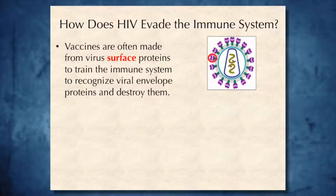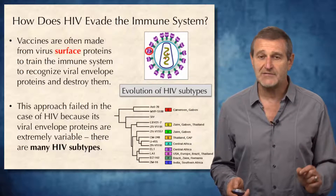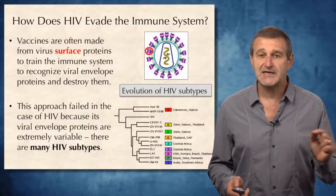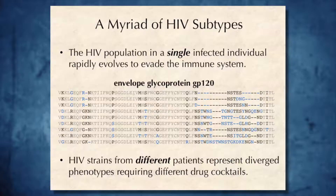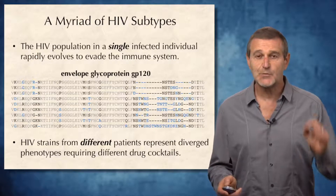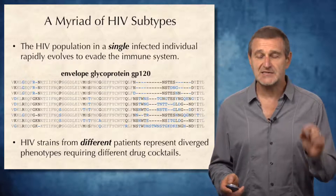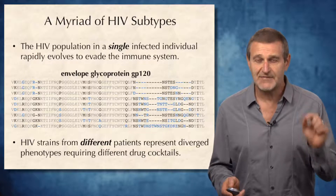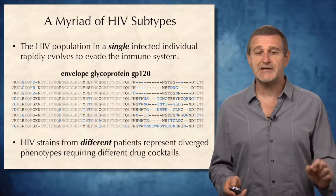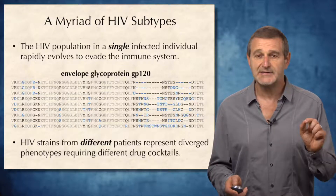Vaccines are often made from viral surface proteins to train the human immune system to recognize viral envelope proteins and destroy them. However, this strategy did not work for HIV because HIV evolves so fast that there is actually a multitude of various HIV subtypes. This slide shows ten sequences from HIV envelope glycoprotein GP120, showing a large number of substitutions, insertions, and deletions within a single patient. HIV viruses in a single patient evolve at a very fast rate of 2% per nucleotide per year, and HIV strains in different patients are so diverged that they require different drug cocktails.